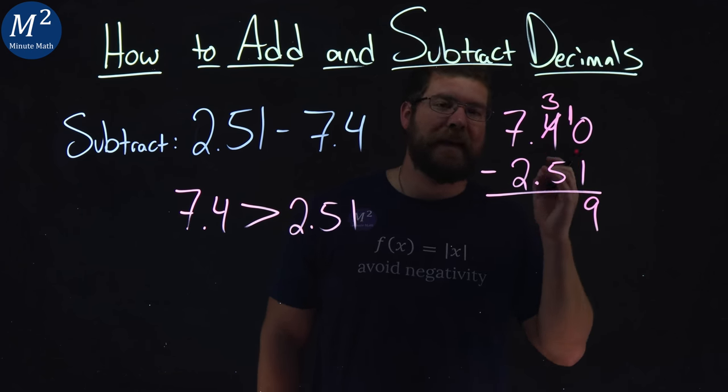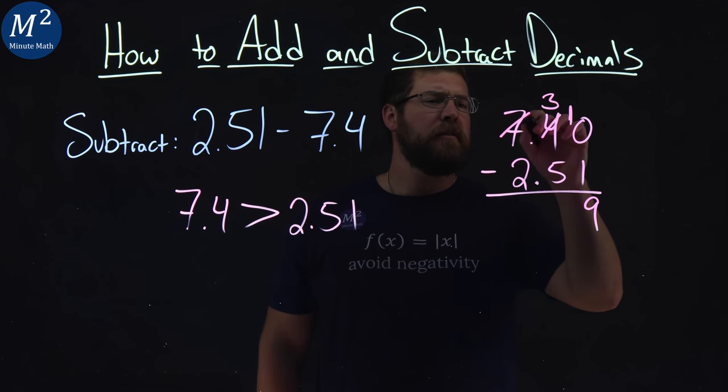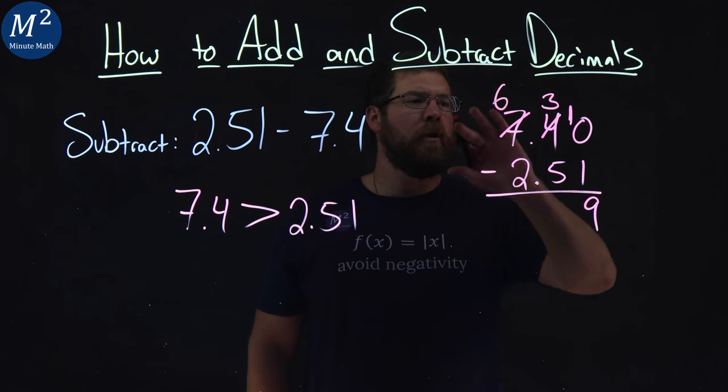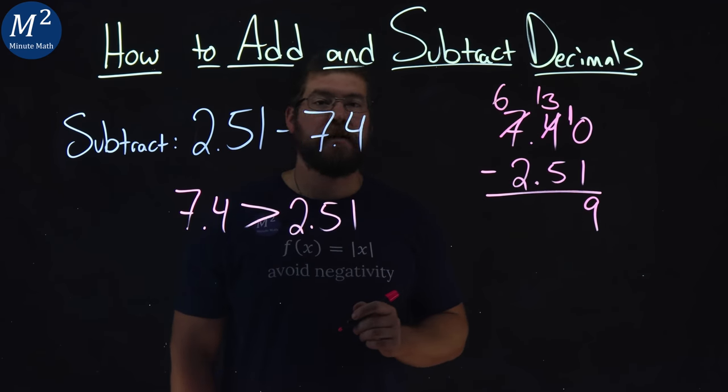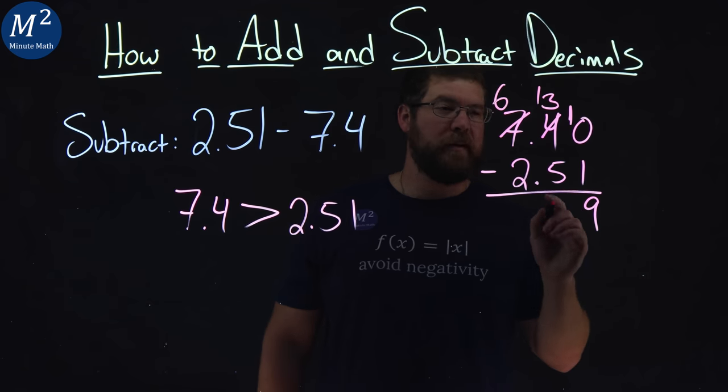Now 3 minus 5, can't do that again. 7 becomes a 6, we're borrowing from that. Make 3 into a 13. Now 13 minus 5 comes out to be an 8.